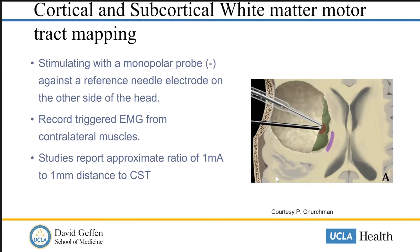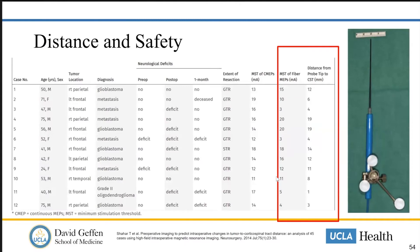Studies indicate that the amount of current required to trigger one of these responses, especially in the deep white matter, can correlate to the distance from those motor tracts. This is really data shown from the study by Shahar and company, which leads us to conclude that there is a correlation of about one milliamp per millimeter distance from these motor tracts. So the stimulation mapping can be done interchangeably with resection, and as you get closer and closer to the critical motor fibers, you see less and less amperage required to elicit a motor response.